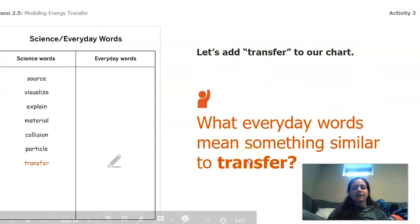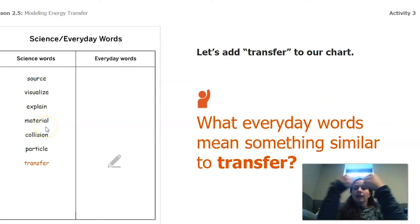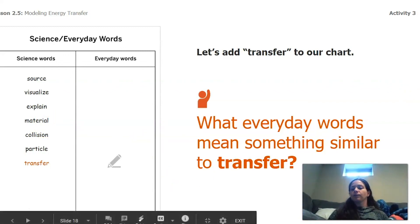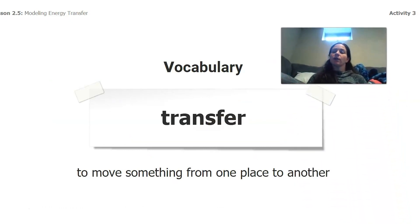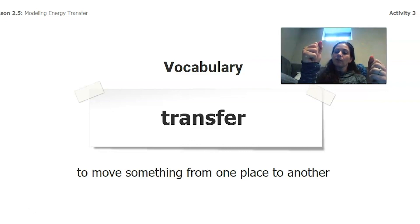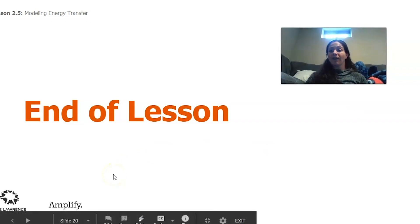You might be keeping a list of scientific words we've been working on: source, visualize, explaining, material, collision, particle — those little pieces — and now we have transfer. Transfer, very simply, is to move something from one place to another. When we talk about energy transferring, the energy is moving from one particle to another after a collision. That's all we have for today. Tomorrow we're actually going to write to the superintendent and let her know what we've found out. I'll see you tomorrow.